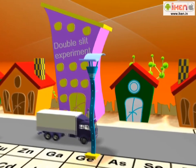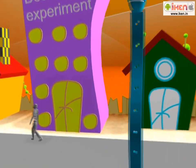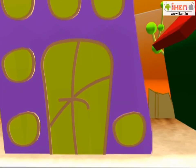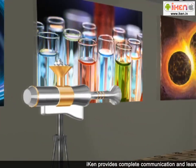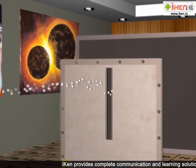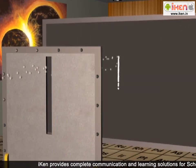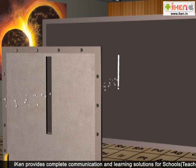Young's Double Slit Experiment. Let's see how particles or little balls of matter act. If we randomly shoot a small object, say a marble, at the screen,